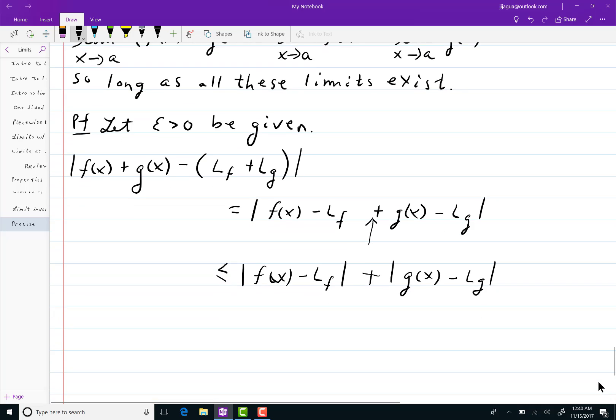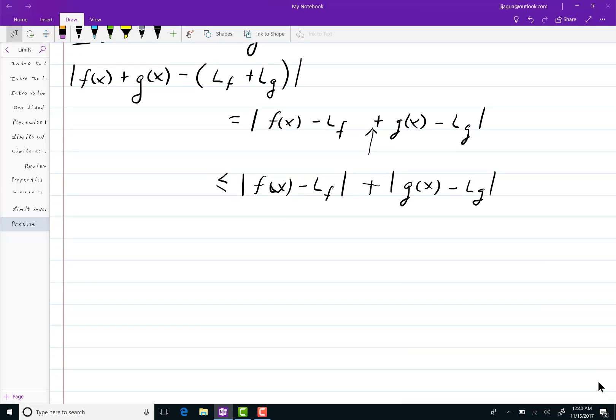Now, what I'm going to try to do is make this whole thing turn out to be less than epsilon. After I write some steps, let me put dots here to represent those steps. At the very end, I'm going to get less than epsilon.